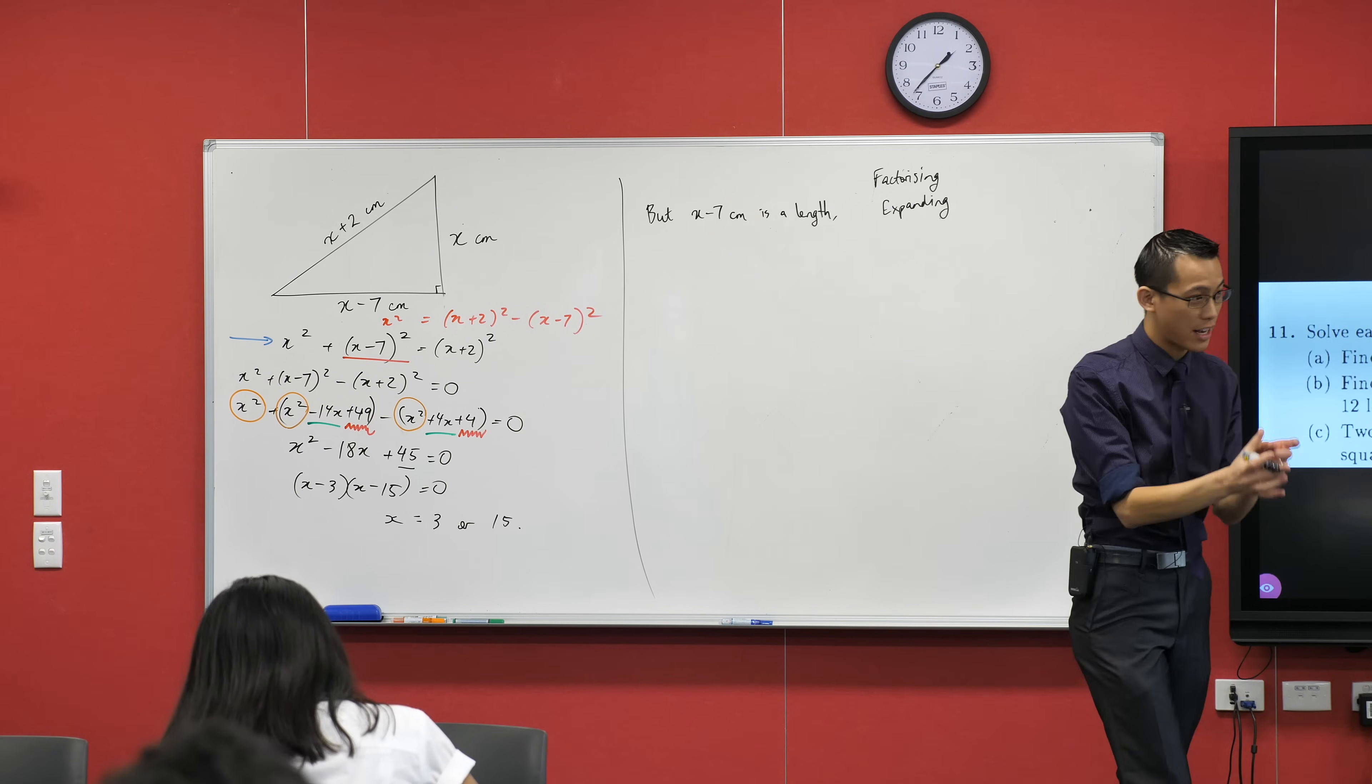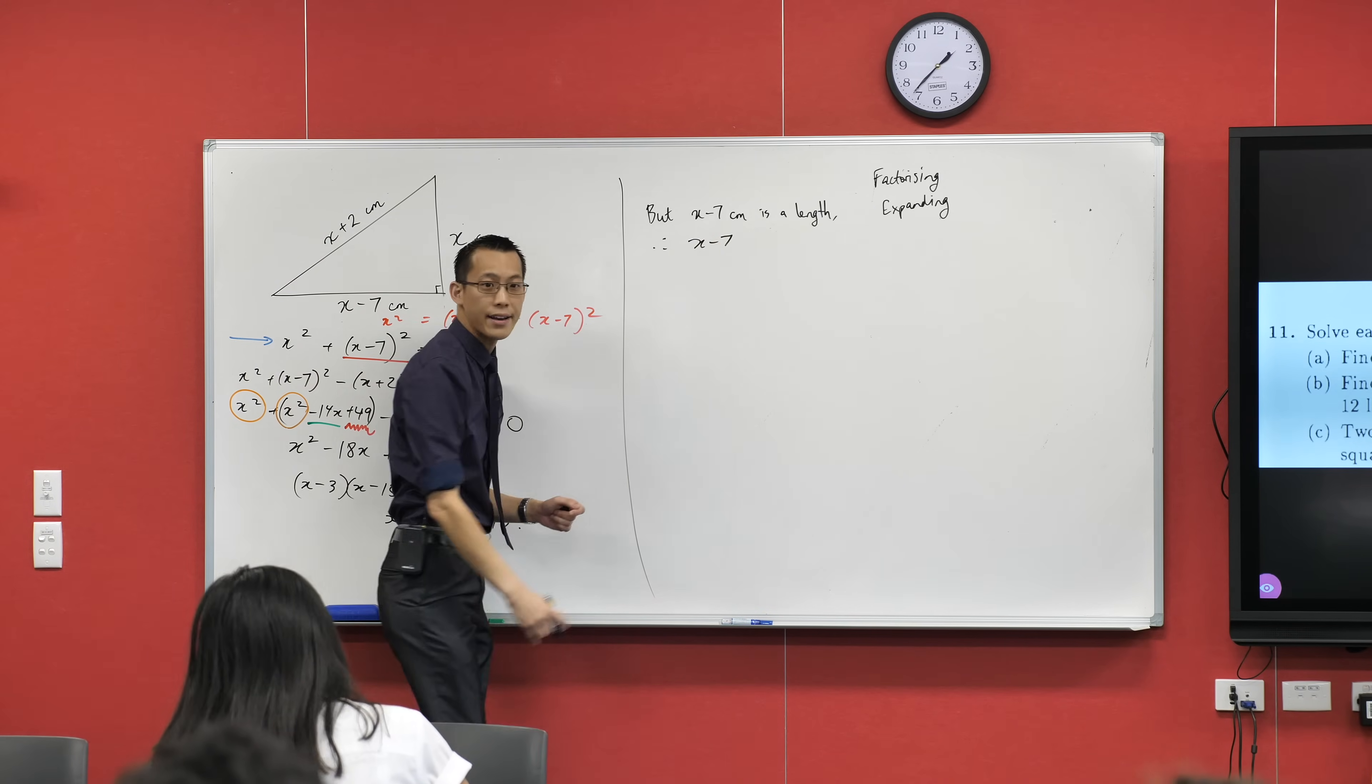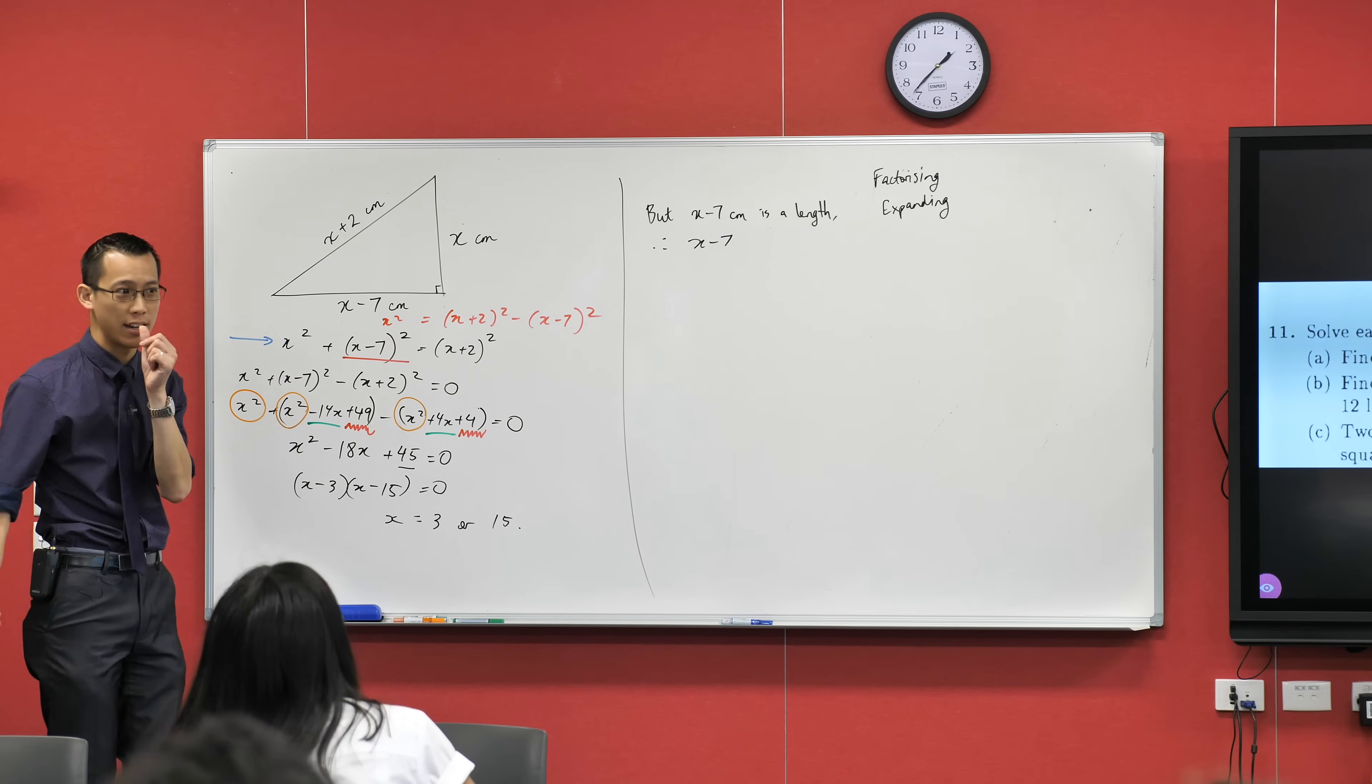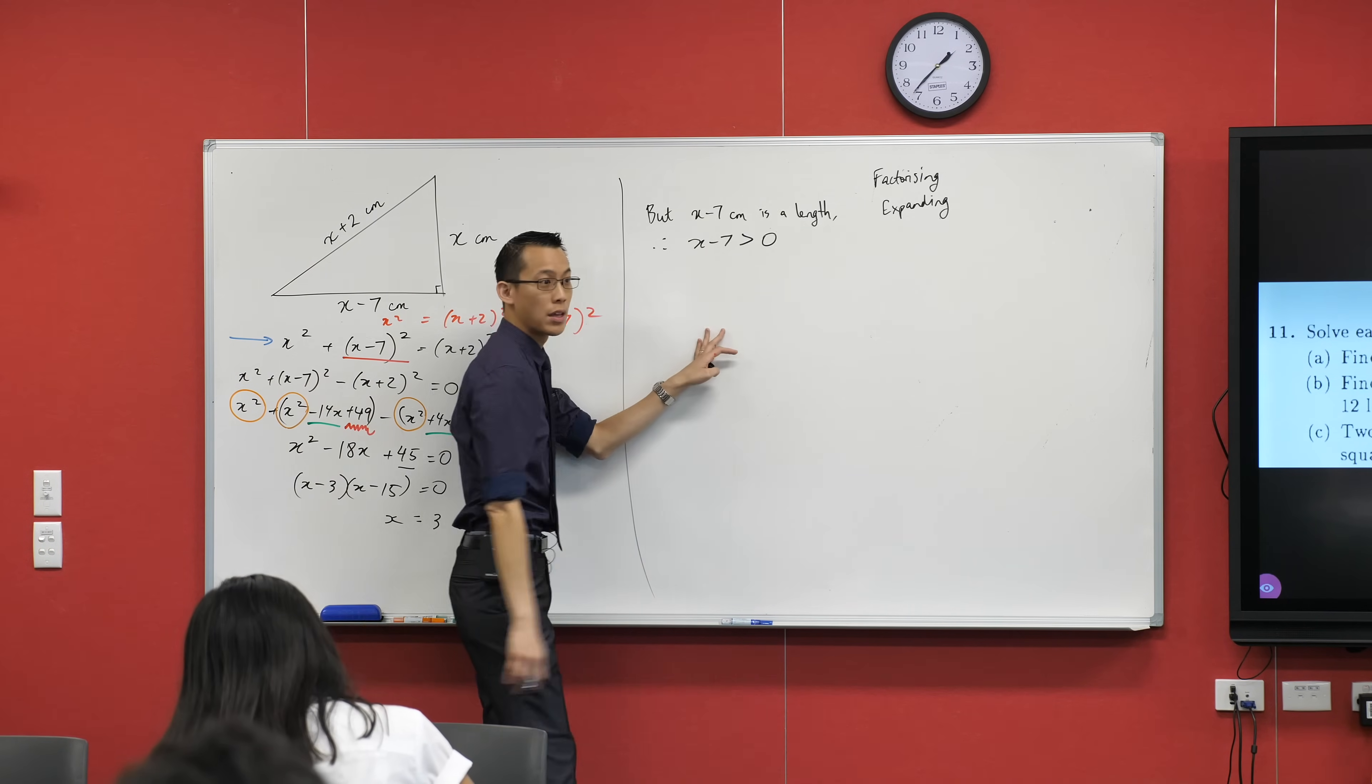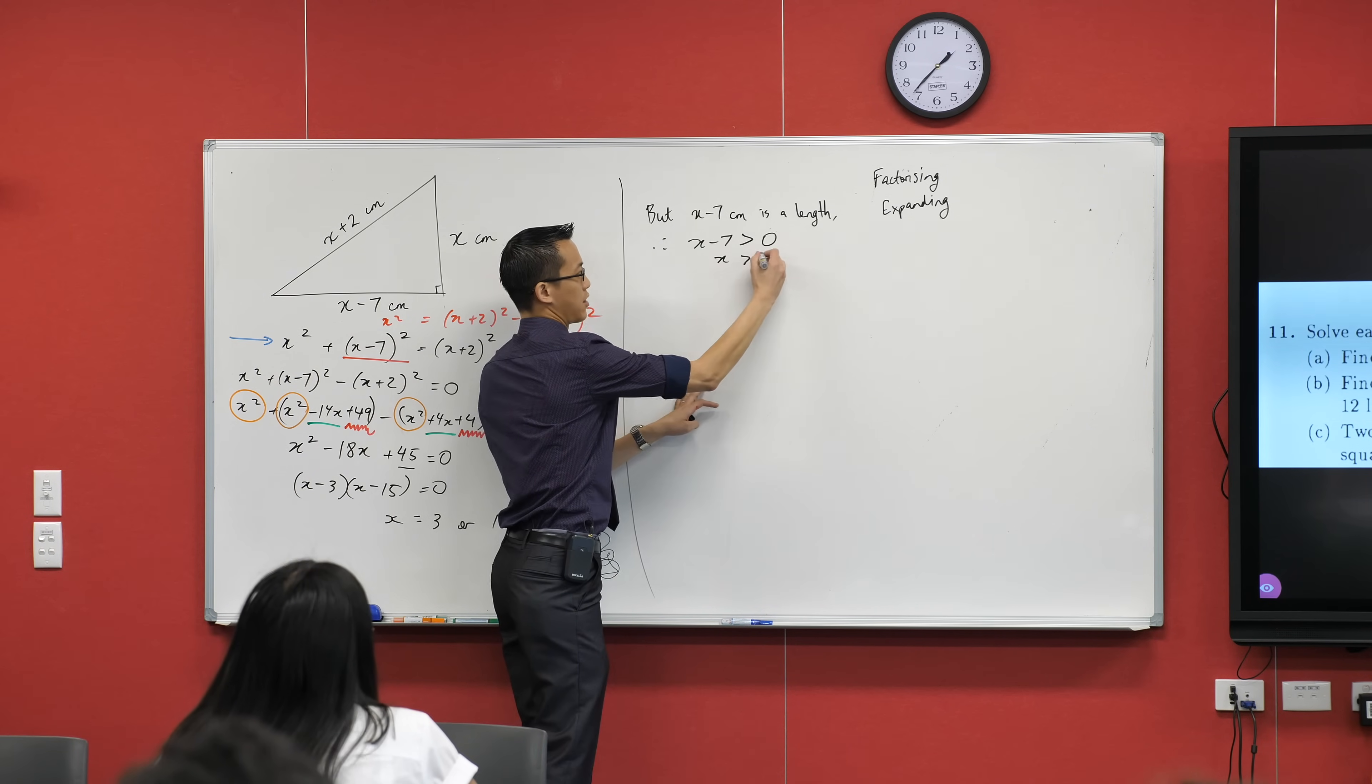So therefore, x minus 7, the value, it has to be, is it allowed to be equal to 0? Can I let it be exactly 0? No, I can't because then there's no triangle, is there? So it has to be greater than and not equal to 0, right? That thing has to be positive. That means that x is greater than 7. You can see why x equals 3 no longer satisfies that, right?